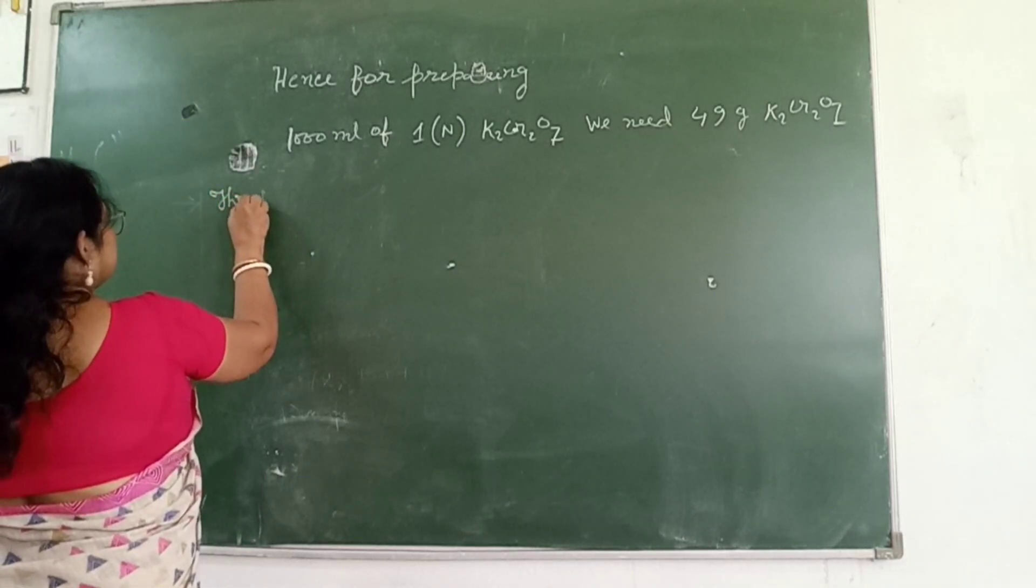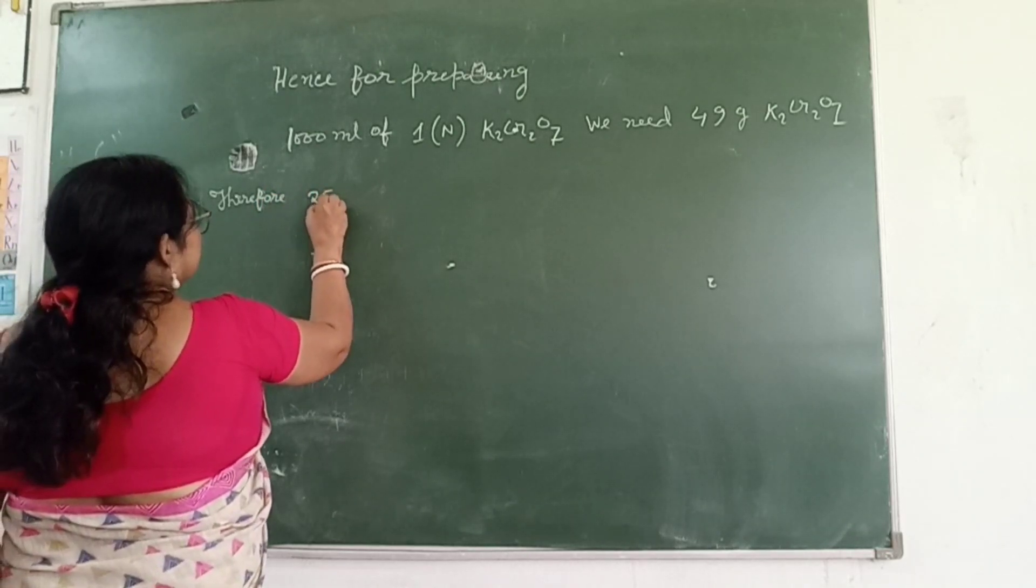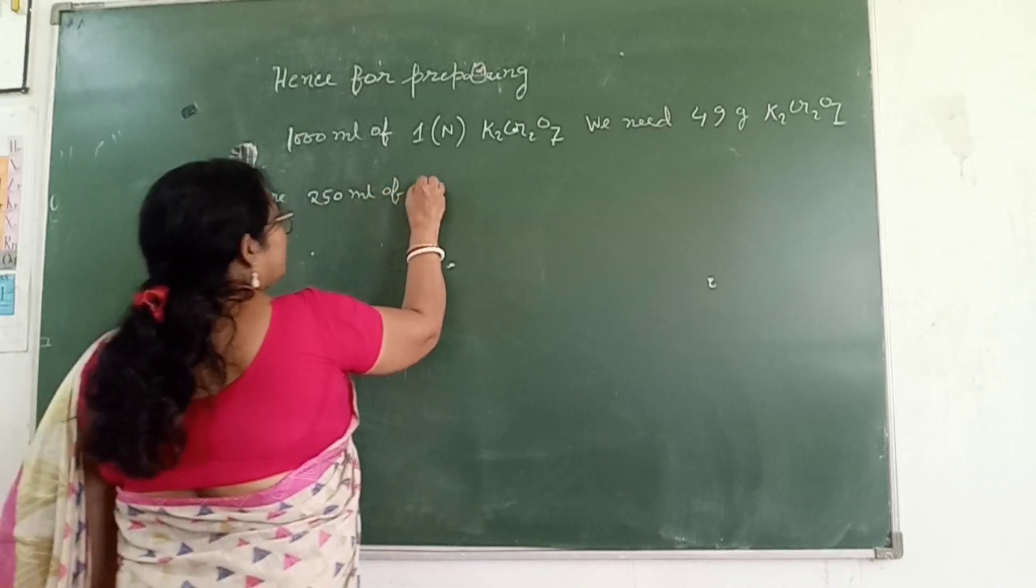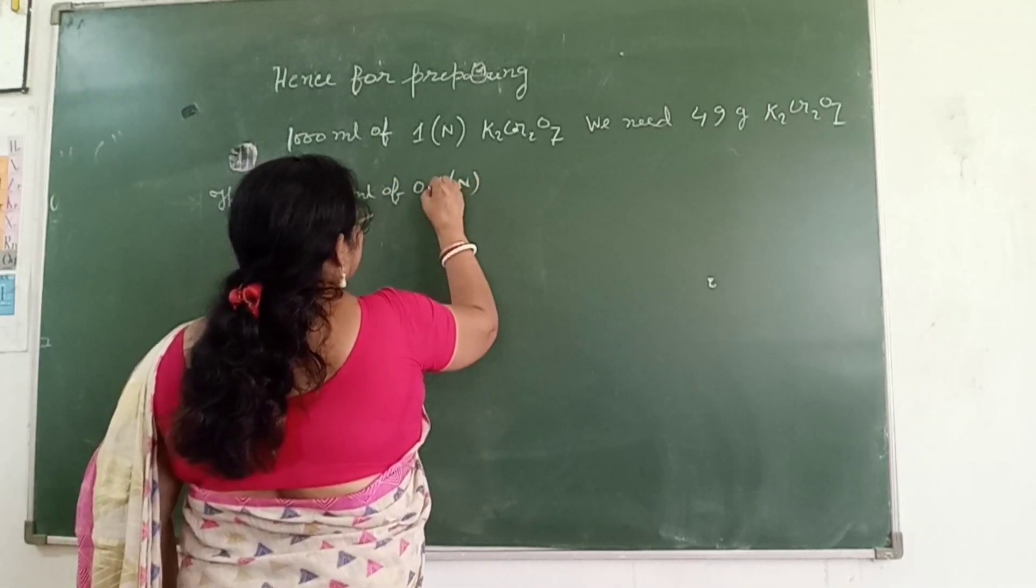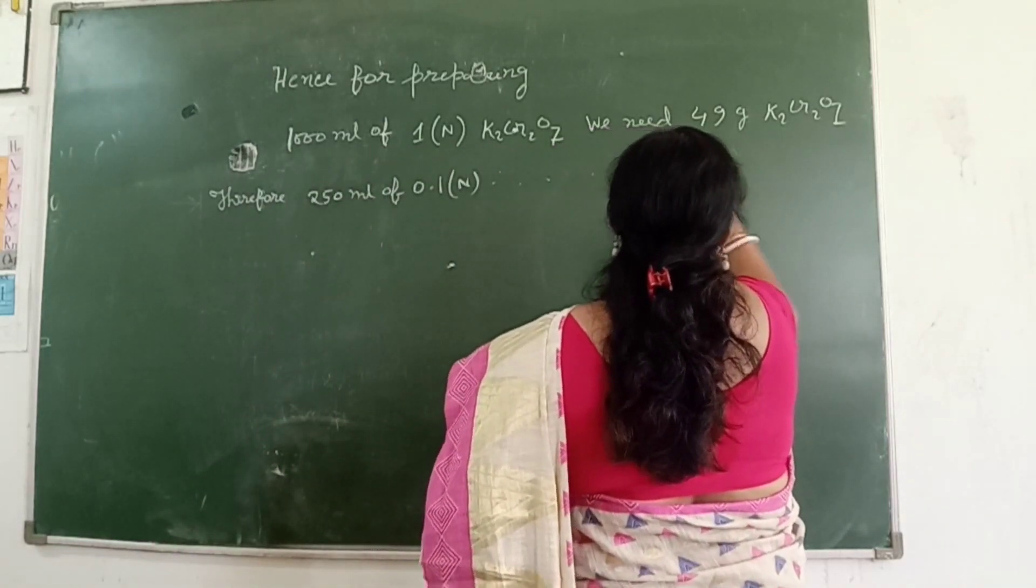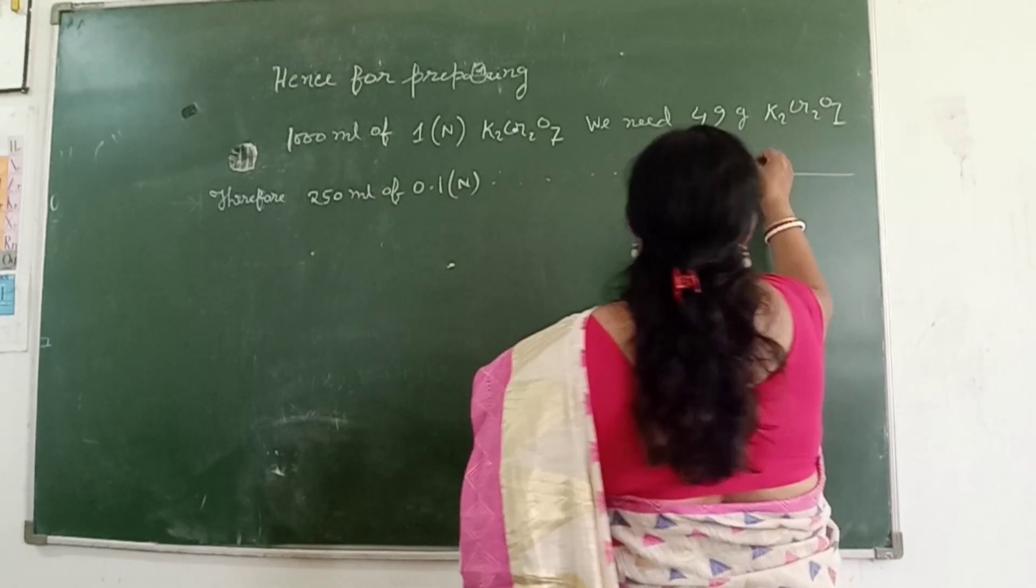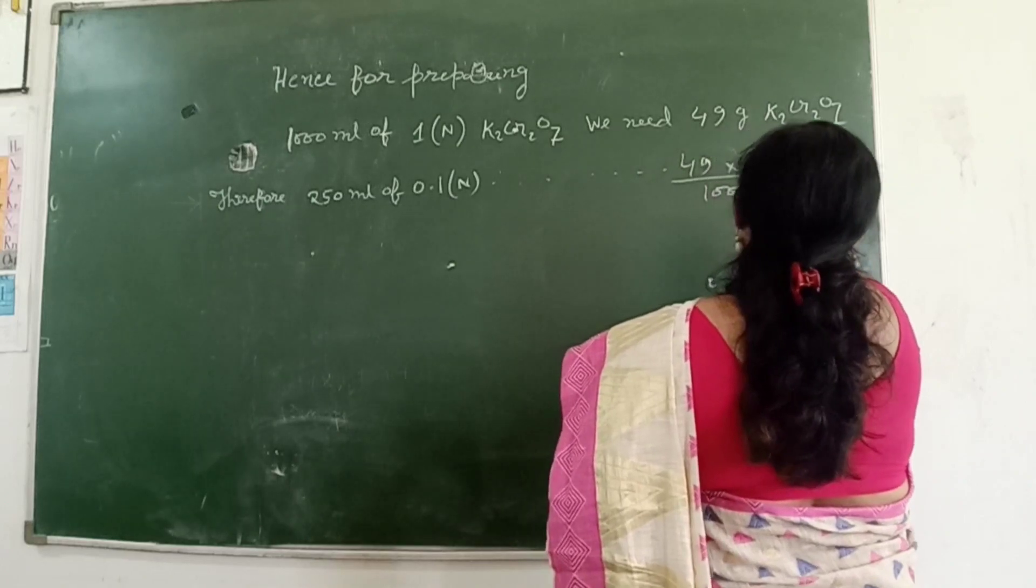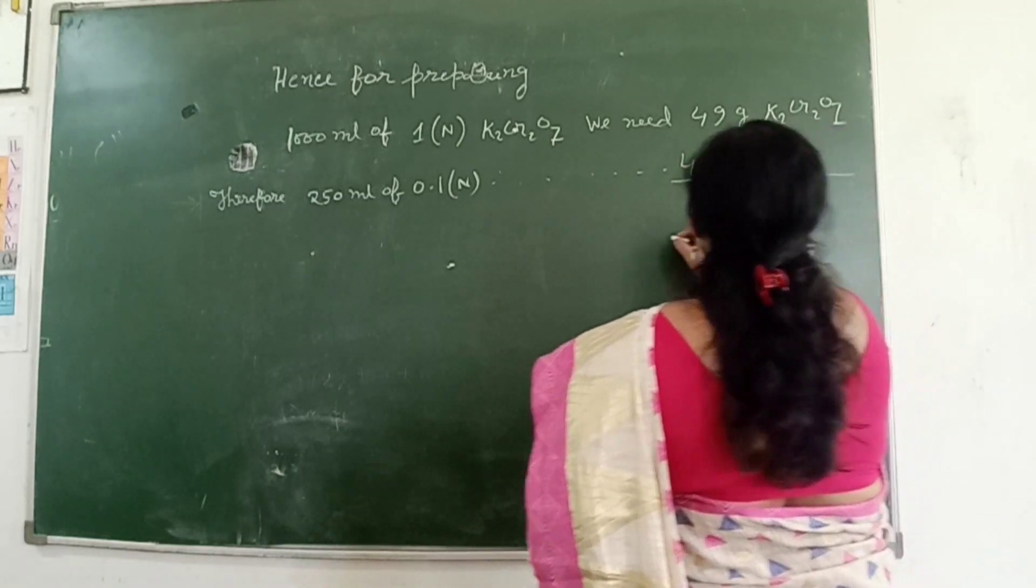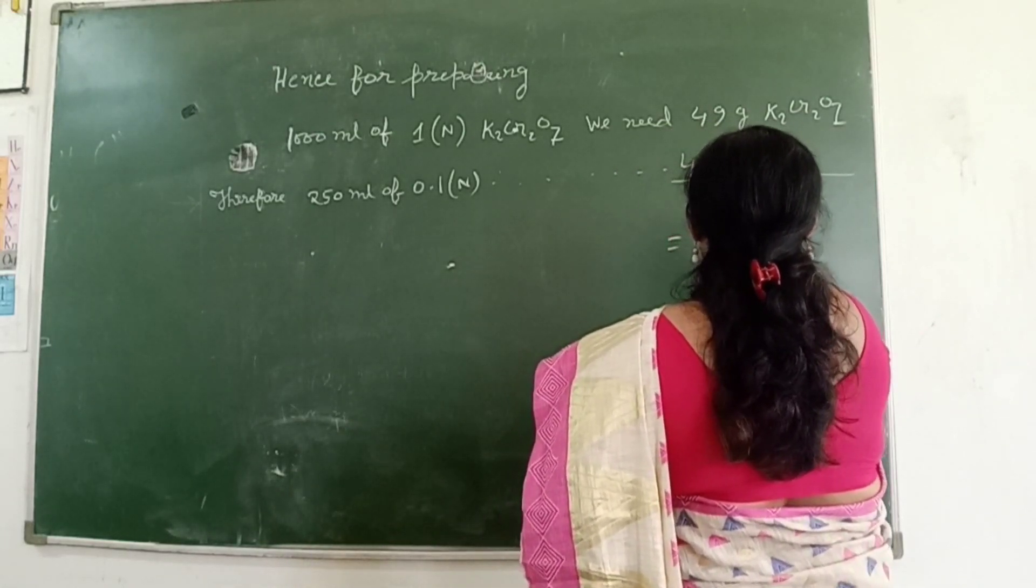Therefore, 250 ml of 0.1 normal potassium dichromate will be 49 divided by 1000 into 250 into 0.1, which equals 1.225 grams.